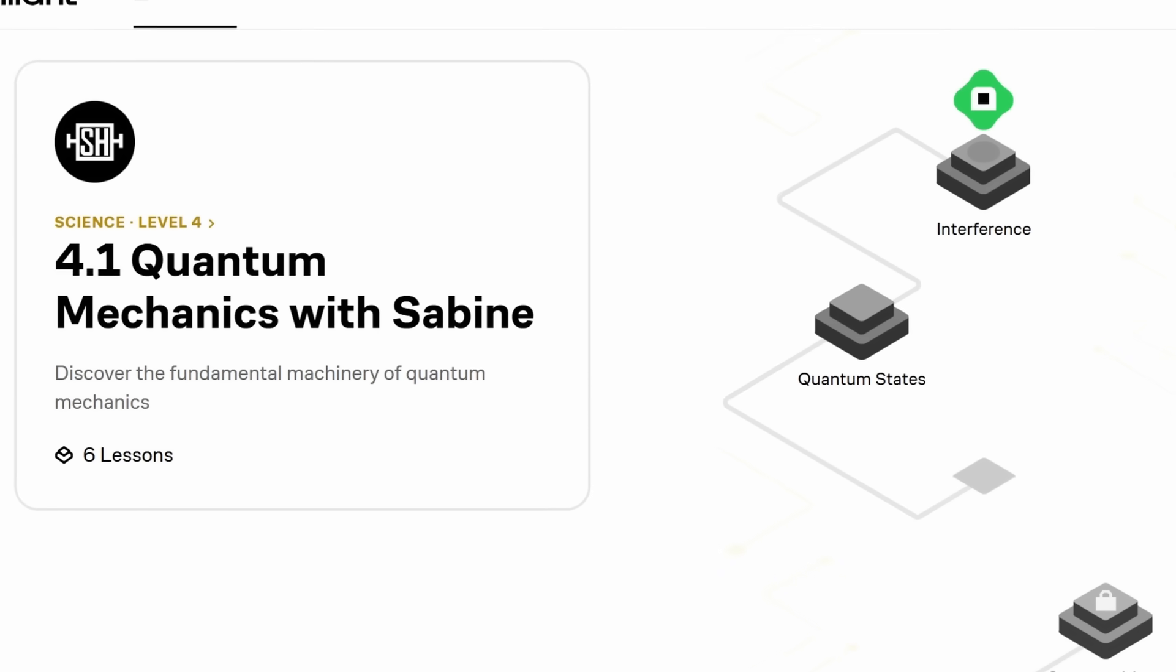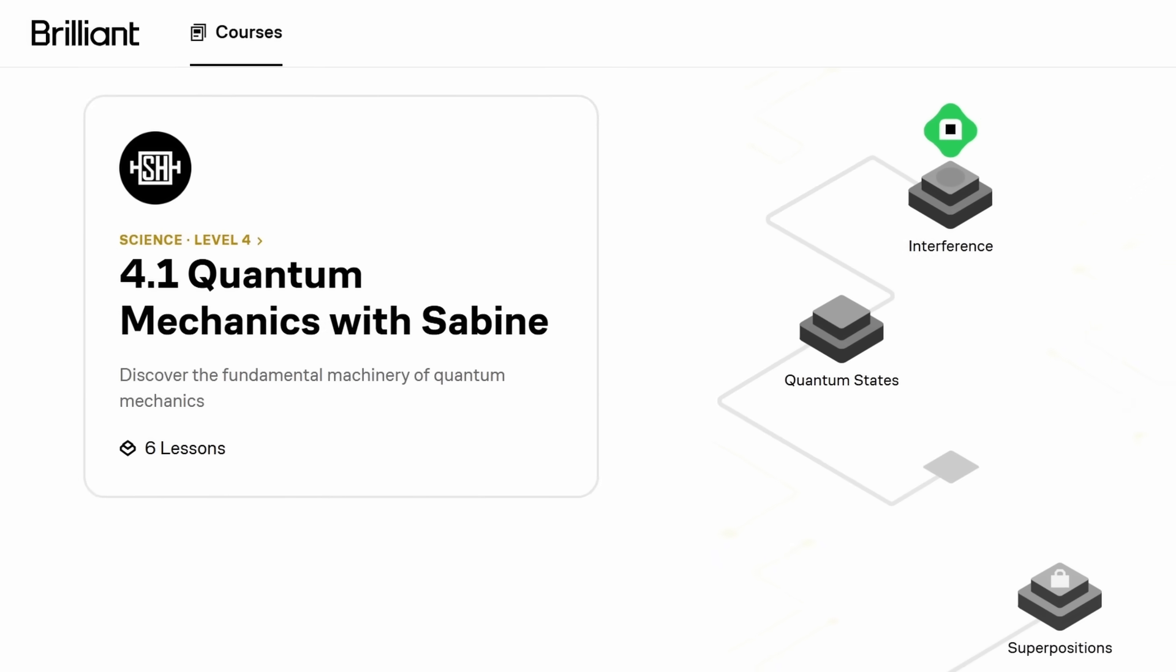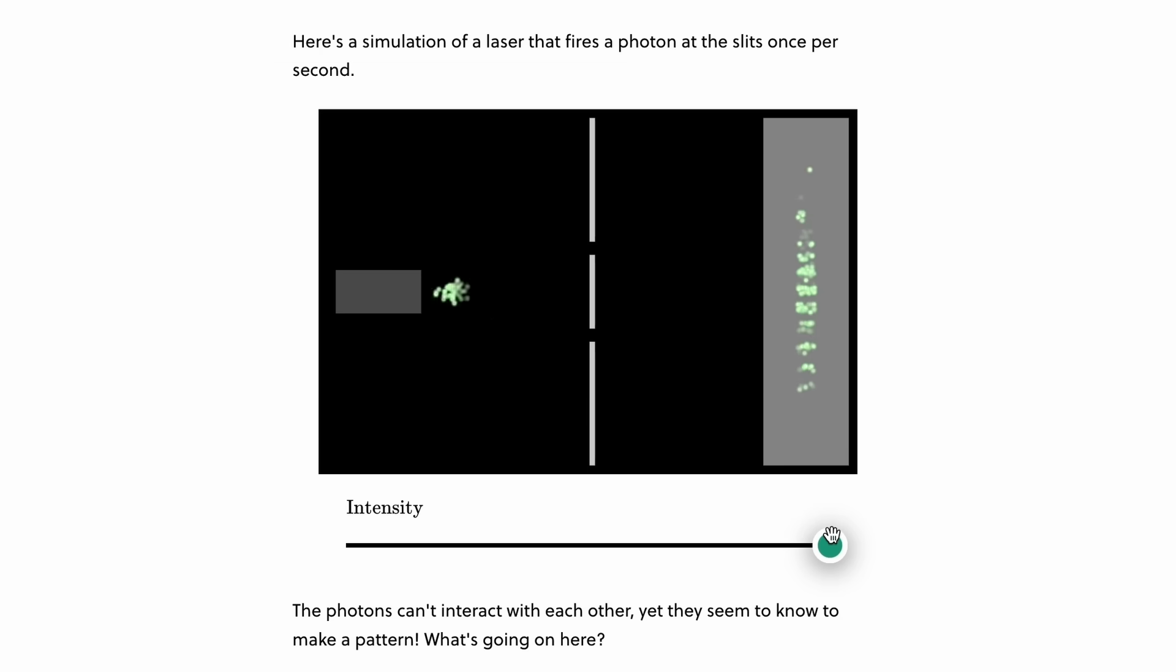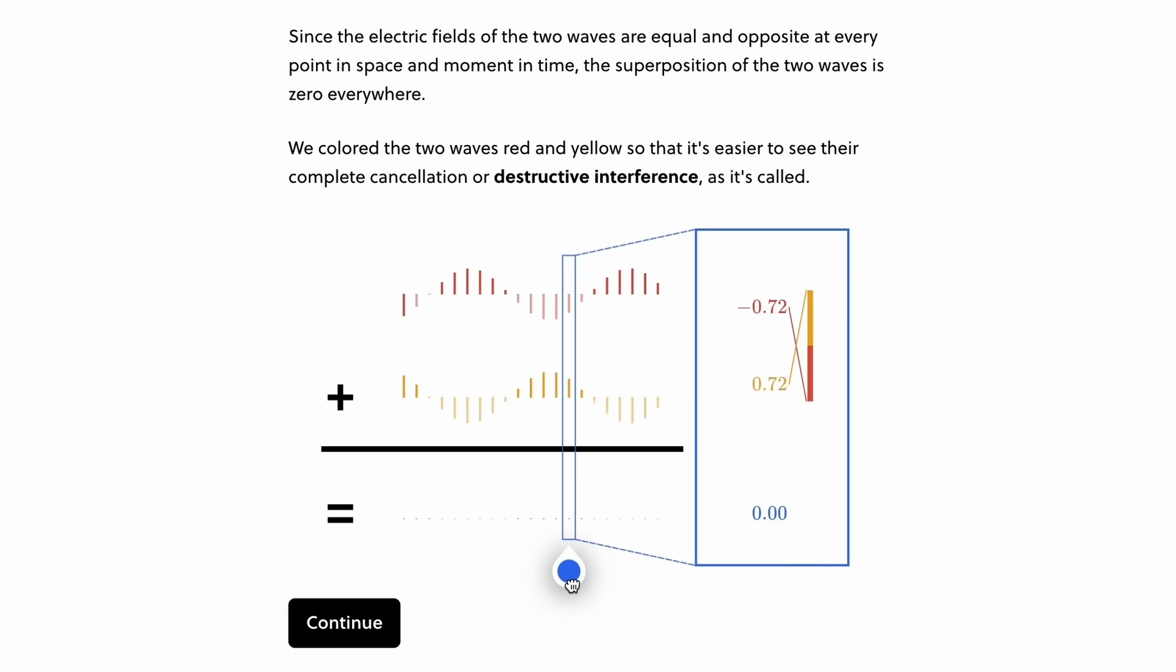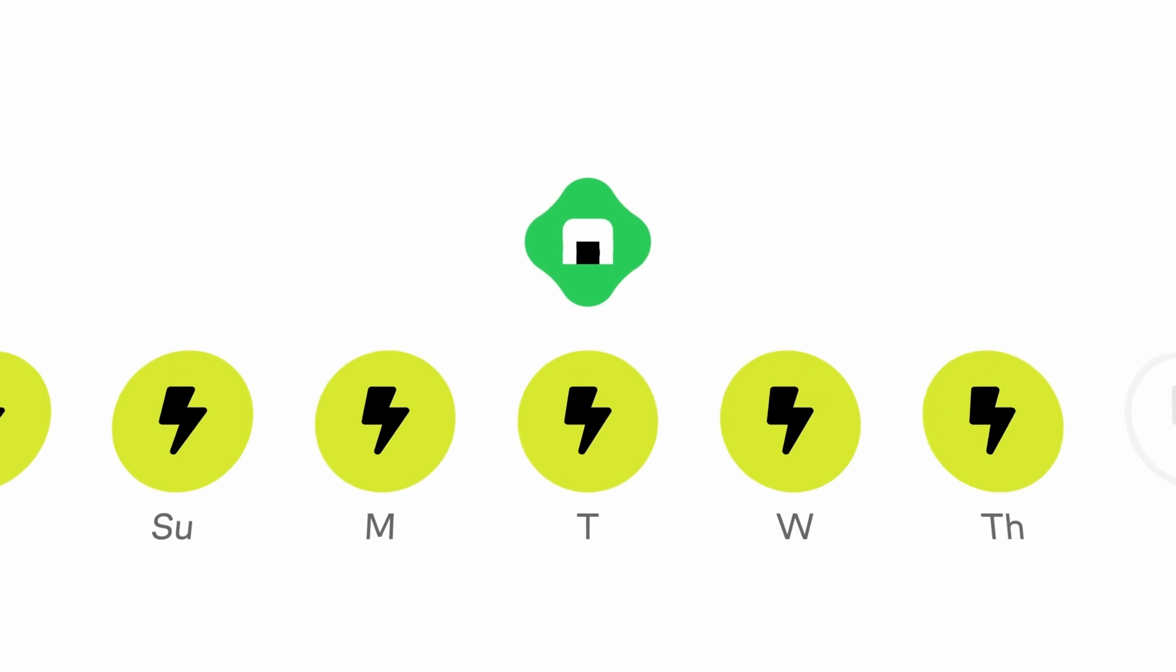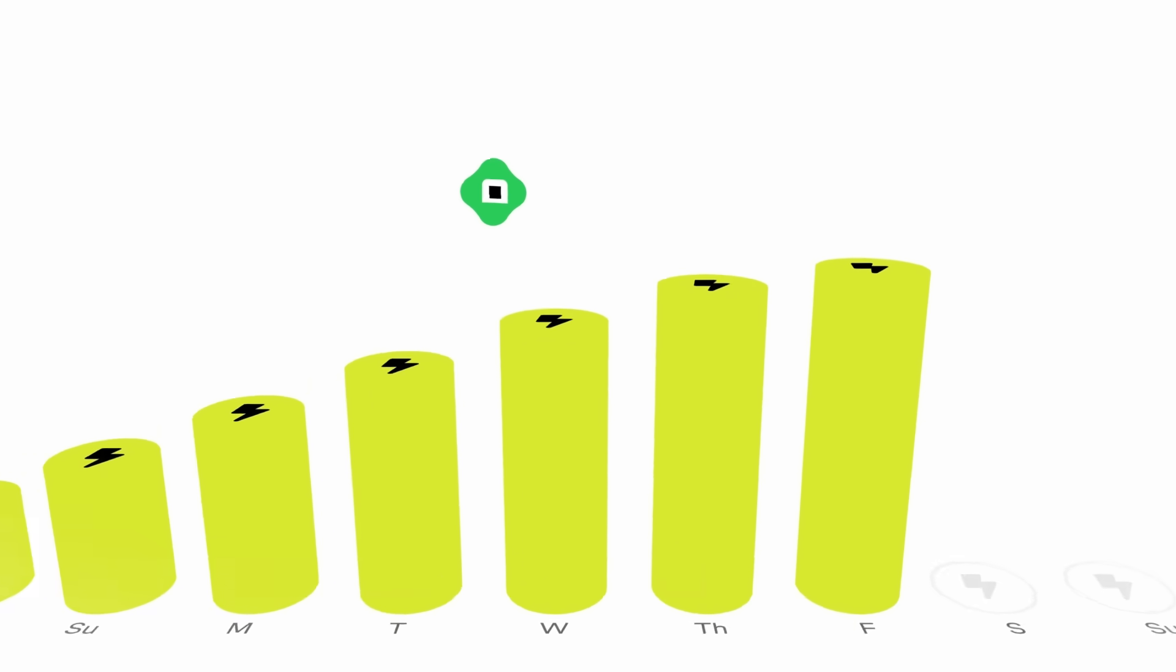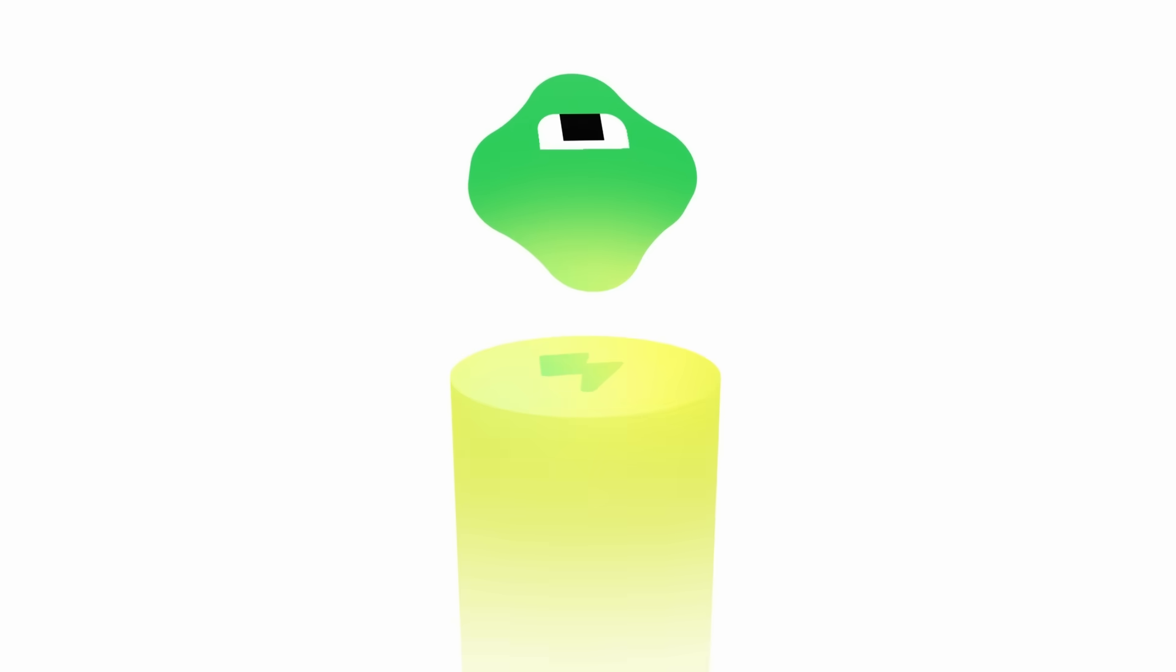I even have my own course on Brilliant. That's an introduction to quantum mechanics. It'll help you understand what a wave function is and what the differences between superpositions and entanglement. It also covers interference, the uncertainty principle and Baugh's theorem. And after that, you can continue maybe with their course on quantum computing or differential equations.